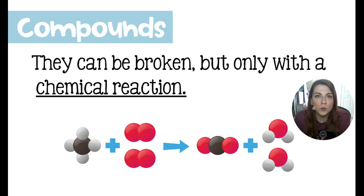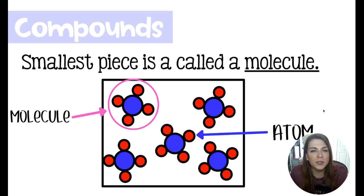Compounds can be broken apart, but the only way to do that is with a chemical reaction. So right here, we have a combustion. This is specifically methane, carbon, and four hydrogens. It's going to react with two oxygen molecules to form a molecule of carbon dioxide and two water molecules. The smallest piece of a compound is called a molecule.